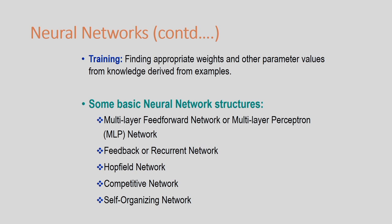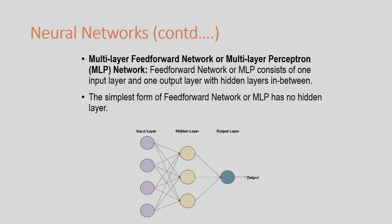I will briefly explain all these networks, mainly the concept of the MLP — the multi-layer perceptron — and also the competitive network and the self-organizing network. In case of the multi-layer feed forward network or multi-layer perceptron MLP, you can see in the figure I have one input layer and one output layer, and in between one hidden layer.